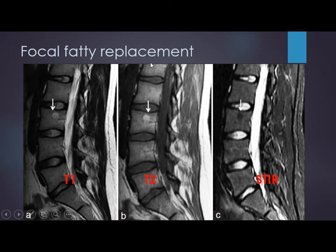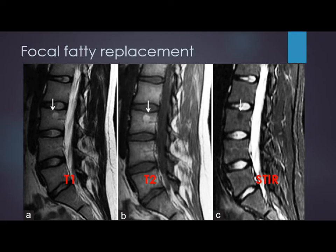Sometimes there is just focal fatty replacement — appearing as a mass that is high on T1 and high on T2. Without other sequences, we might call this hemangioma, although both are benign. On STIR, however, there is marked decrease in signal of the focal fatty replacement, while a true hemangioma will not suppress as markedly because it is not all fat. This helps differentiate focal fatty replacement from hemangioma. If you see a lesion that is not completely suppressed on fat-saturation T2, it is the typical pattern of hemangioma.